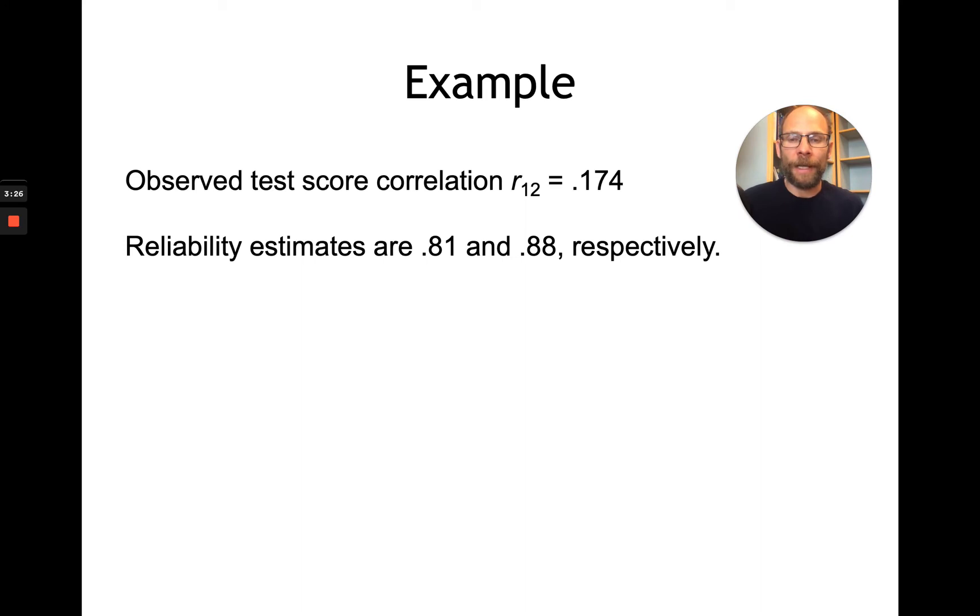And now let's say we estimate the reliabilities for these two measurements to be 0.81 and 0.88. Then we can correct this correlation for attenuation using Spearman's correction for attenuation formula. And then we get the correlation between true scores is equal to 0.174 divided by the square root of 0.81 times the square root of 0.88, is about 0.206.